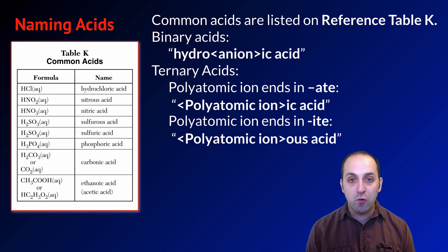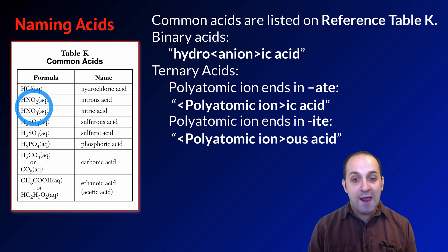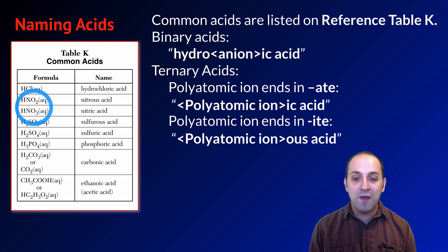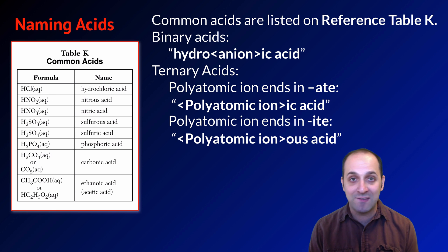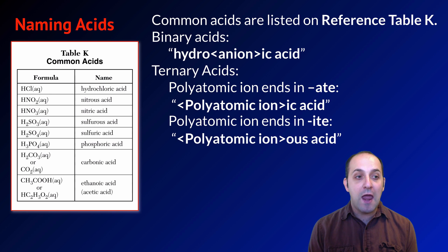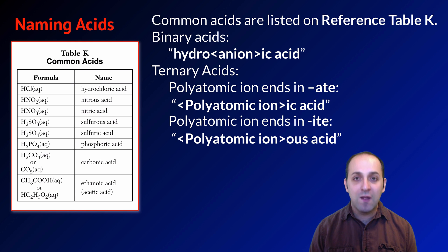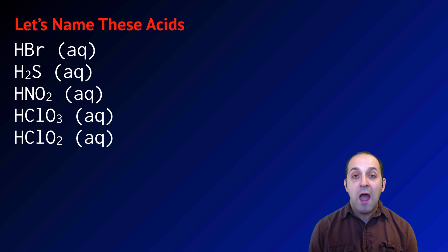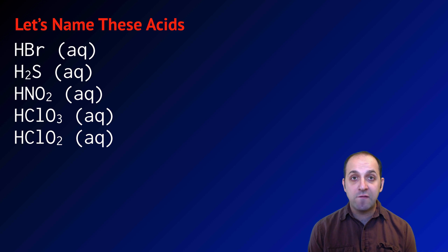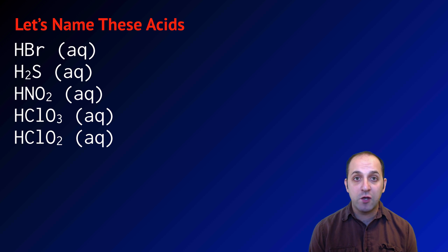You can see this on Reference Table K with HNO₂ and HNO₃. NO₃⁻ is nitrate, so the name of that acid is nitric acid. NO₂⁻ is nitrite, so the name of that acid is nitrous acid. Now pause the video, try naming these acids on your own, and then we'll go through it together.